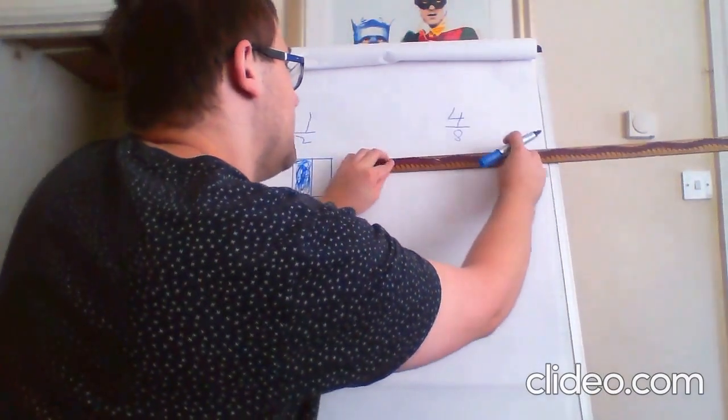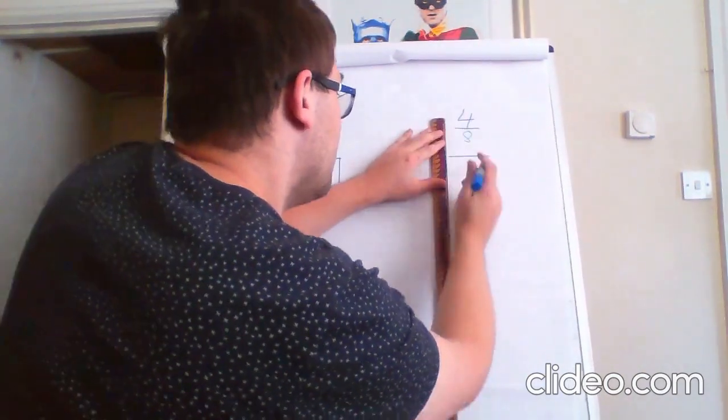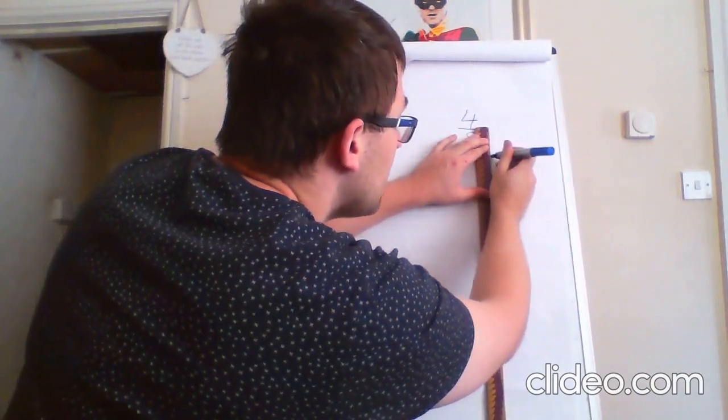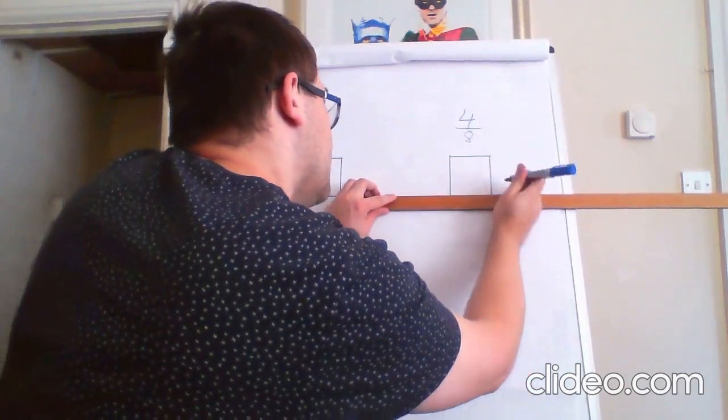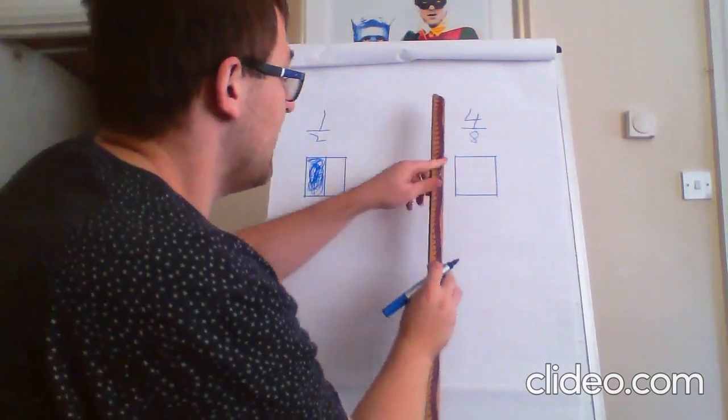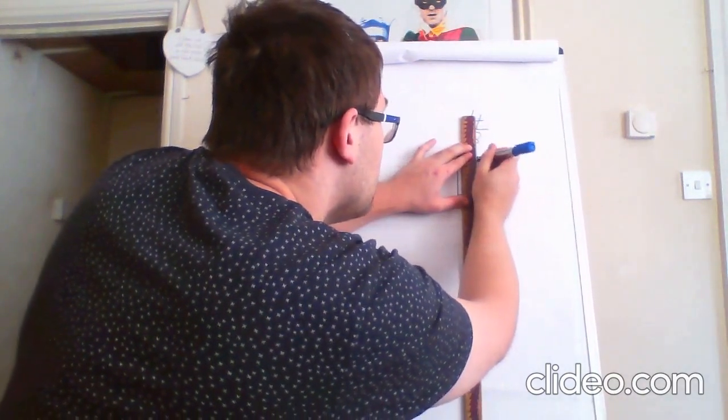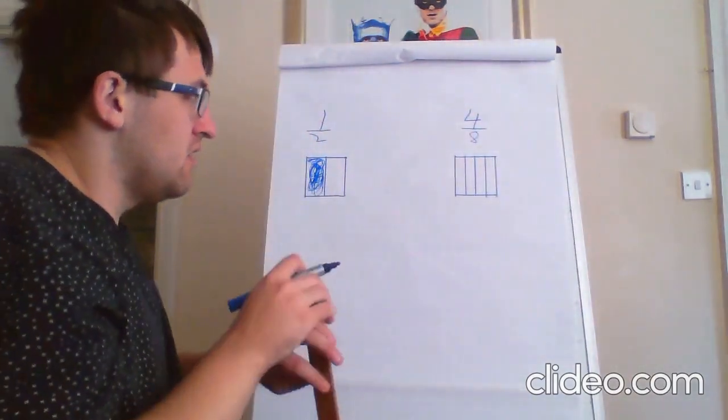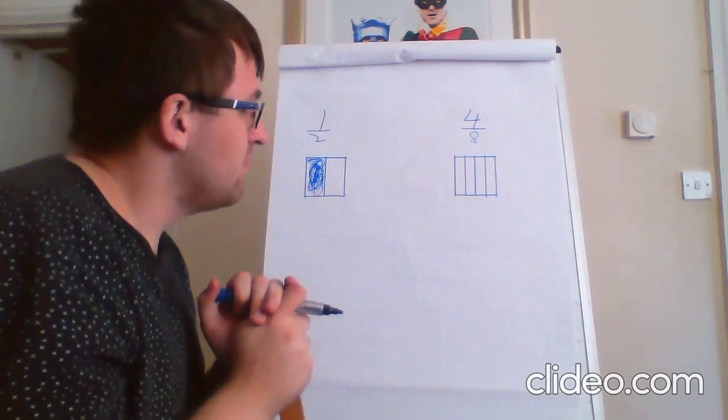Now, I want to do the same for four eighths. So, again, I could do four across. Four down. Down again. And across again. And this time, I want to split it into four parts. So, I'm going to have one, two, three, and four. And Mr. Birkot's done that wrong. Okay?